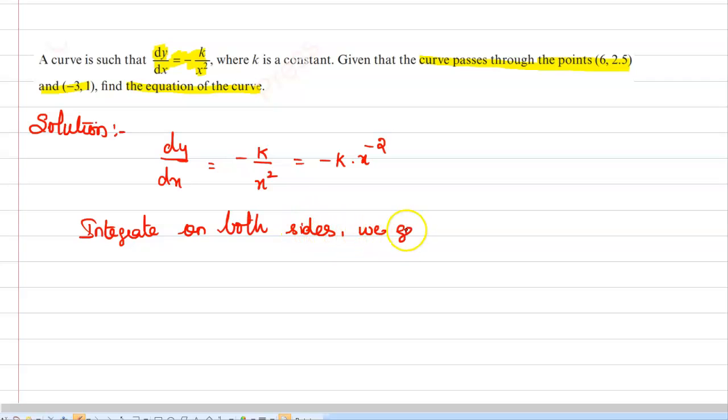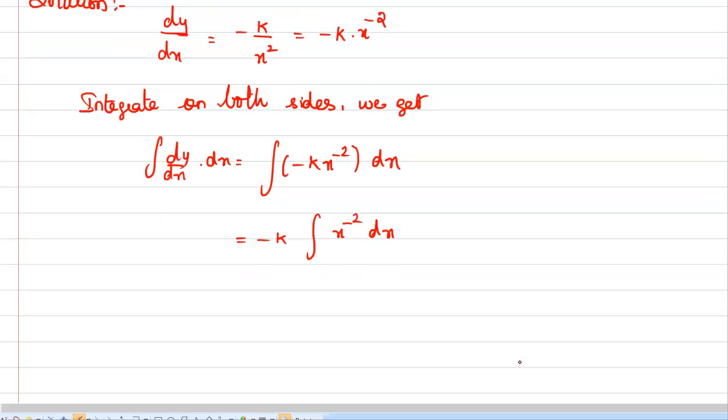We get integral of dy/dx times dx equals integral of minus k times x to the power of minus 2 dx, which equals minus k times integral of x to the power of minus 2 dx. Now apply the formula: this equals minus k times x to the power of minus 2 plus 1, divided by minus 2 plus 1, plus the integration constant.